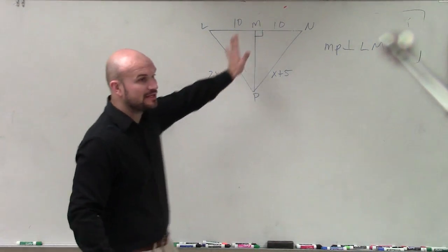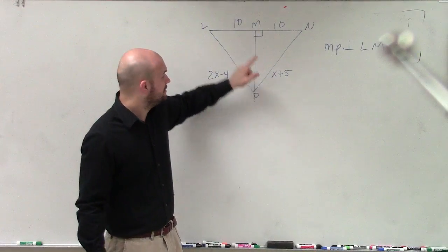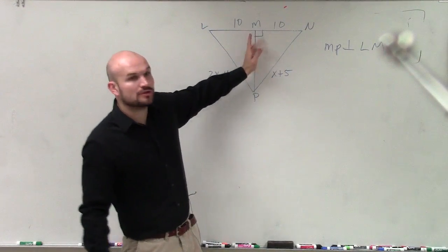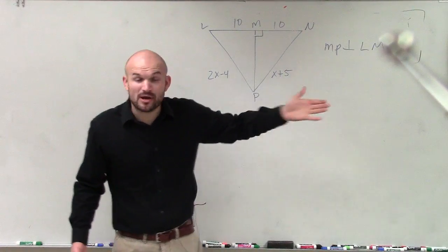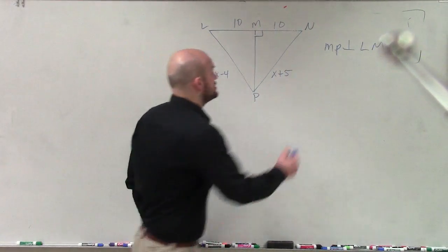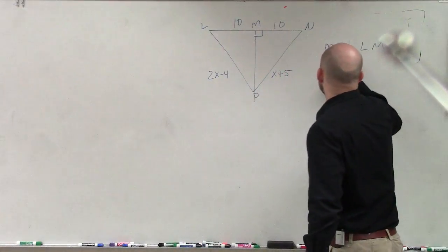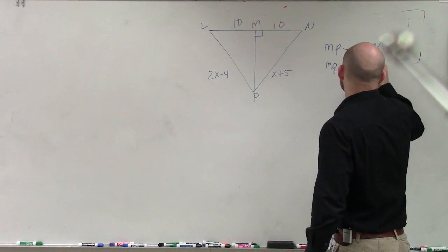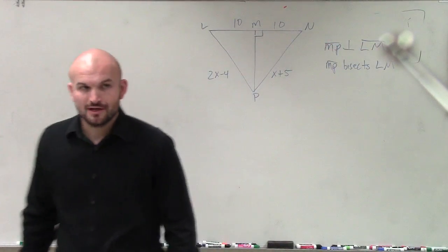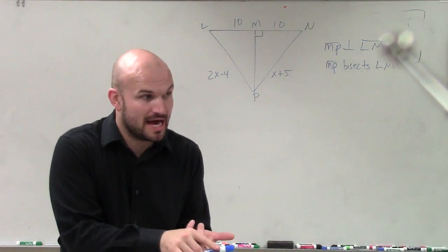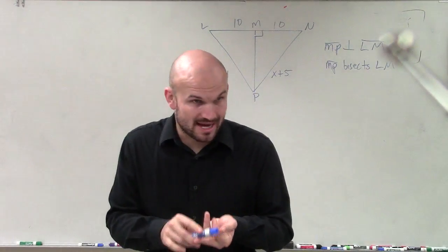So we have a perpendicular line. Now, also about that line, what does that perpendicular line do to the line lm? Yes, Zach? It's the midpoint. It bisects it, right? So you could also say mp bisects lm. So not only is it perpendicular to lm, it also bisects lm.